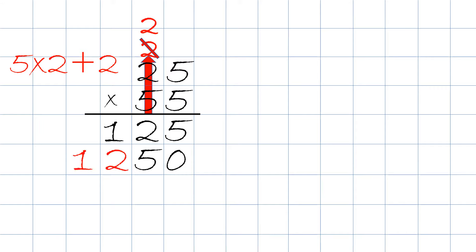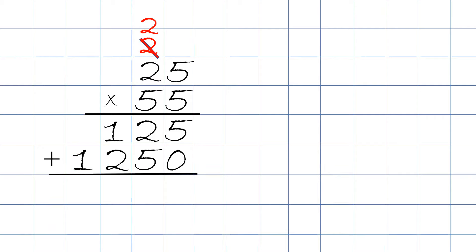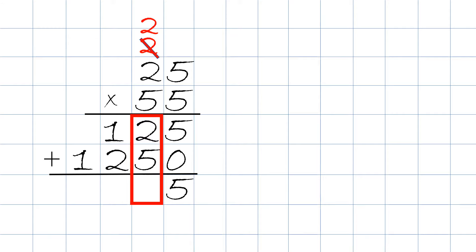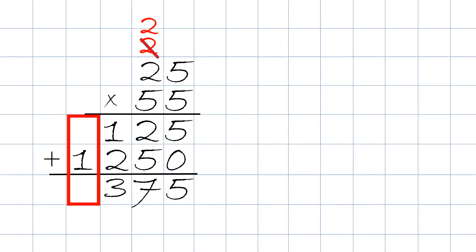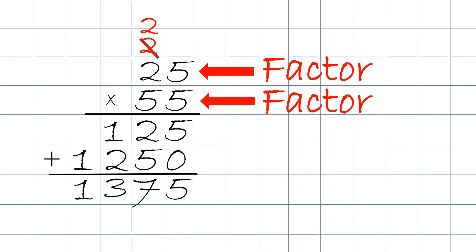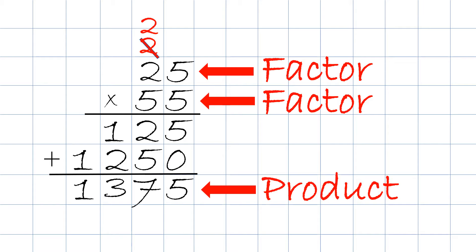This time you write both digits — 12 right up here. Next we add them up, starting with the right column: 5 plus 0 equals 5, 2 plus 5 equals 7, 1 plus 2 equals 3, and nothing plus 1 will equal 1. So 25 times 55 equals 1,375. Factor times factor equals the product.